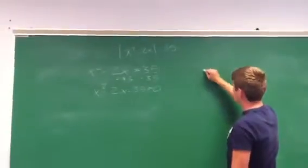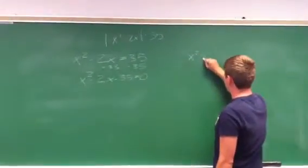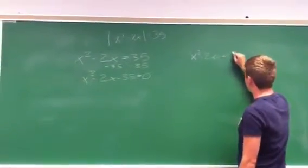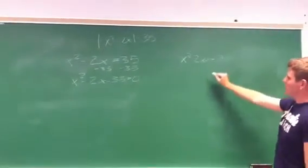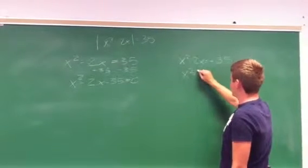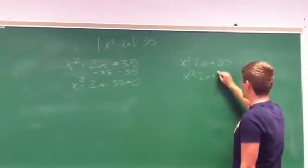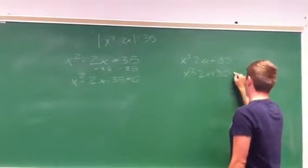You're also going to have x squared minus 2x equals negative 35. So here you're going to want to add 35 to both sides. You get x squared minus 2x plus 35 equals 0.